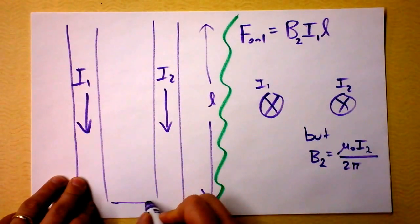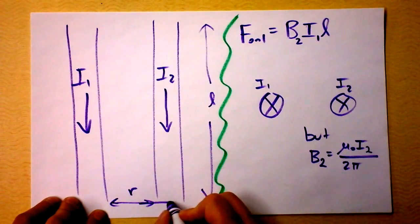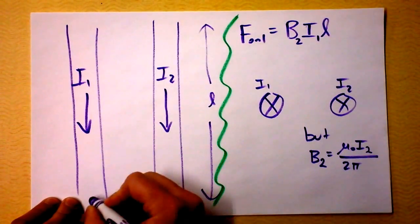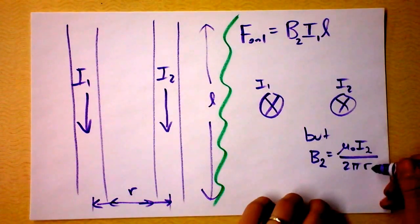We need to get another parameter over here. We're going to call this distance the separation of the wires. It's probably going to be center to center. So let's draw this a little more carefully. I'm going to call that r right there.